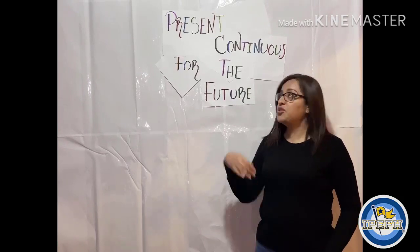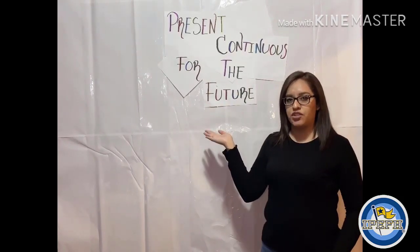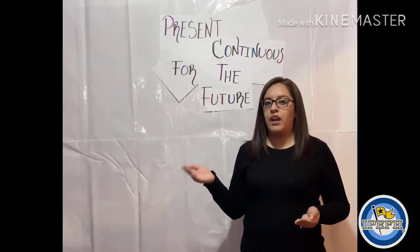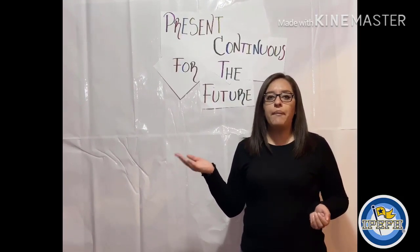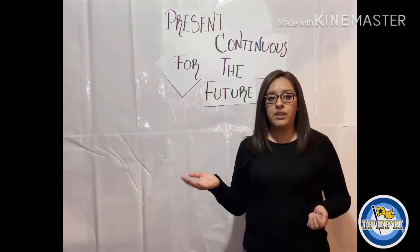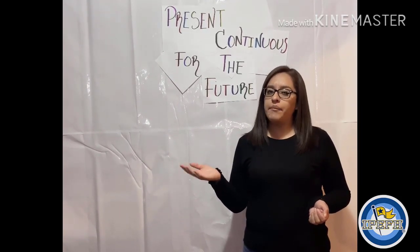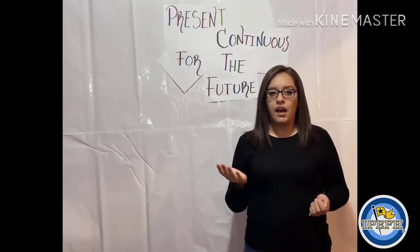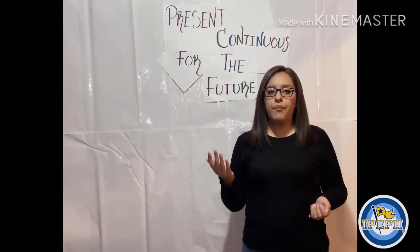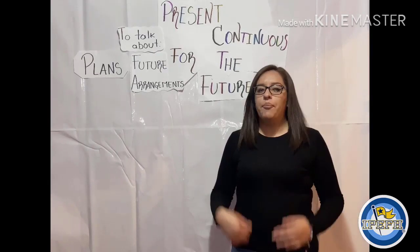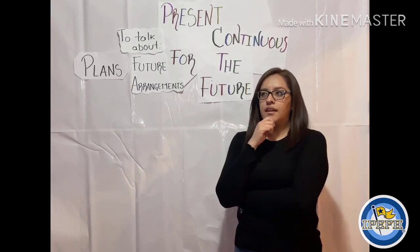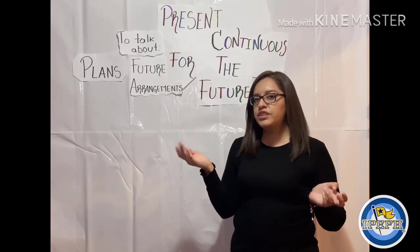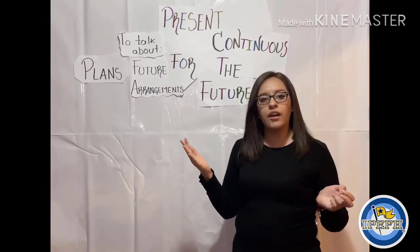Today we are going to see how to use present continuous for the future. You already know how to use present continuous. We use present continuous to talk about activities at the moment of speaking. For example, I am making this video, or you are eating pizza, or maybe I am watching this video. But maybe you are asking: teacher, I know how to use present continuous but I don't know how to use it for the future. Okay, let's see how to use it for that.